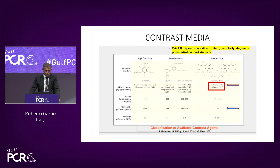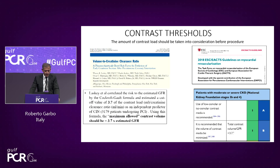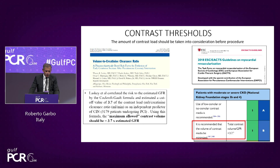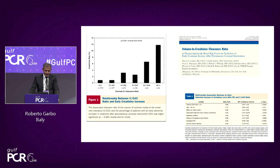The contrast media should be iso-osmolar or low-osmolar — iodixanol is the best choice to avoid kidney problems. Regarding thresholds, a 2007 study introduced the concept of a volume-to-creatinine clearance ratio. The guidelines set this at 3.7 times the estimated GFR, meaning the ratio should stay under 3.7. This study showed that keeping this ratio reduces the risk of contrast-induced kidney problems.